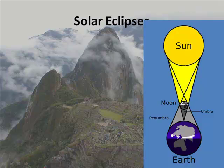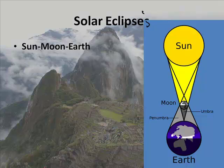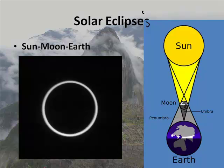A couple more topics here before we're done. The ancient astronomers were also able to observe things called eclipses. There is something called a solar eclipse, where the Sun comes first, then the Moon, then the Earth. These are very rare, but they're very cool when they happen. In the middle of the day, it'll become dark.